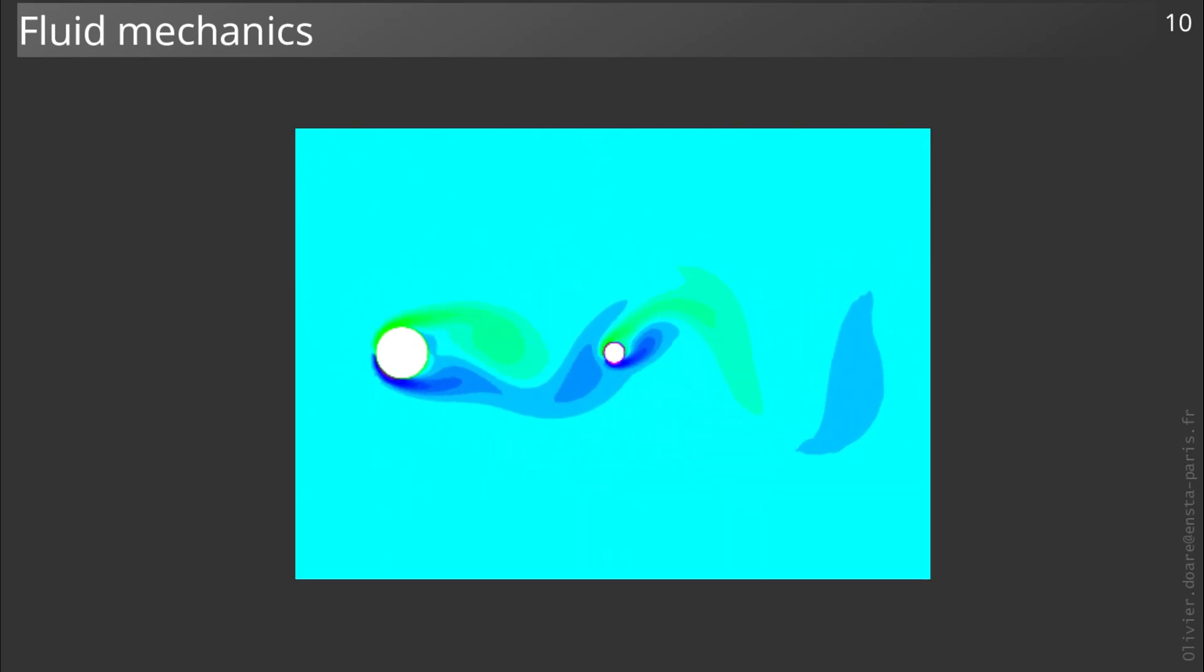We see the appearance of vortices in the wake of the first cylinder that interact with the second cylinder. In this numerical study, the solid is simply seen as a perfectly rigid boundary for the fluid, which is equivalent to imposing a zero velocity on these boundaries.